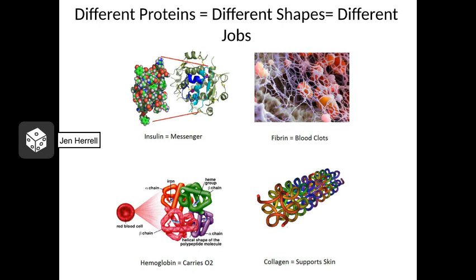Here we have four different proteins, each with different structures and different functions. The first is insulin. Insulin is a messenger — a hormone molecule. It's released by the pancreas when your blood sugar levels begin to rise, and it travels around in the blood until it reaches the liver. It binds with receptors on the liver cells and tells the liver to remove some of the sugar from your blood. The shape of this insulin is really important because if the shape isn't correct, it can't bind with the receptors on the liver cells, so it can't send its message.